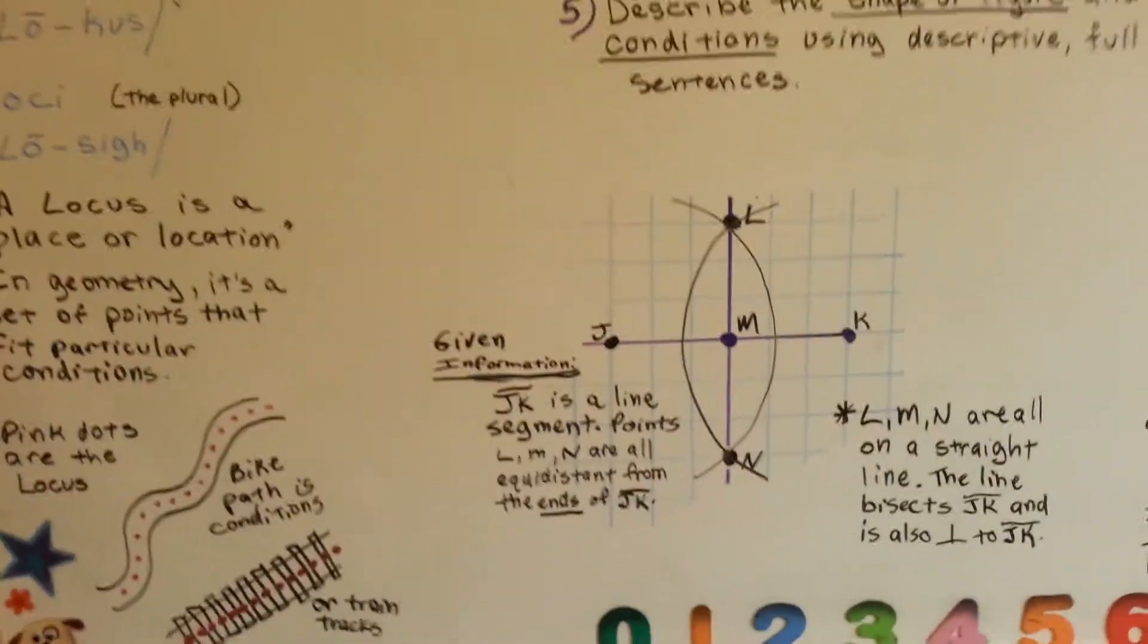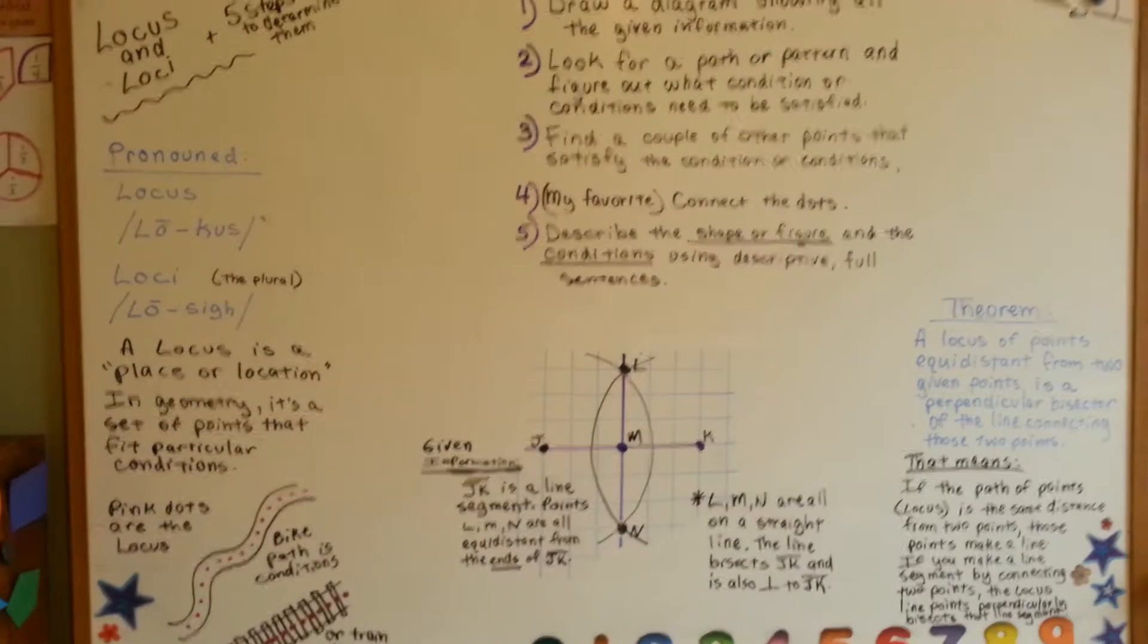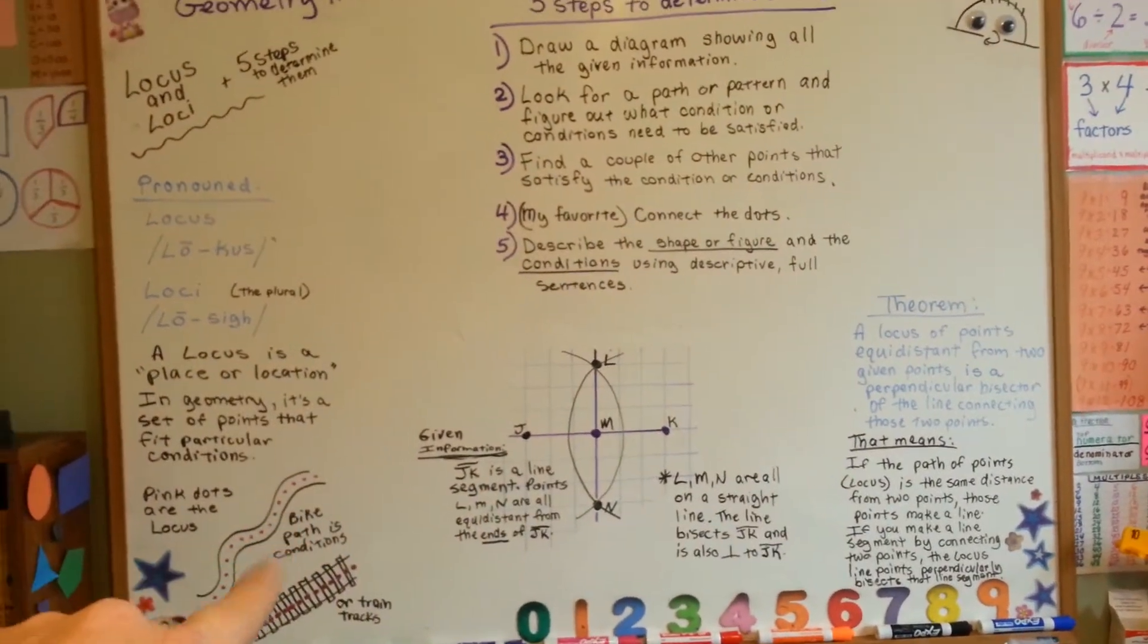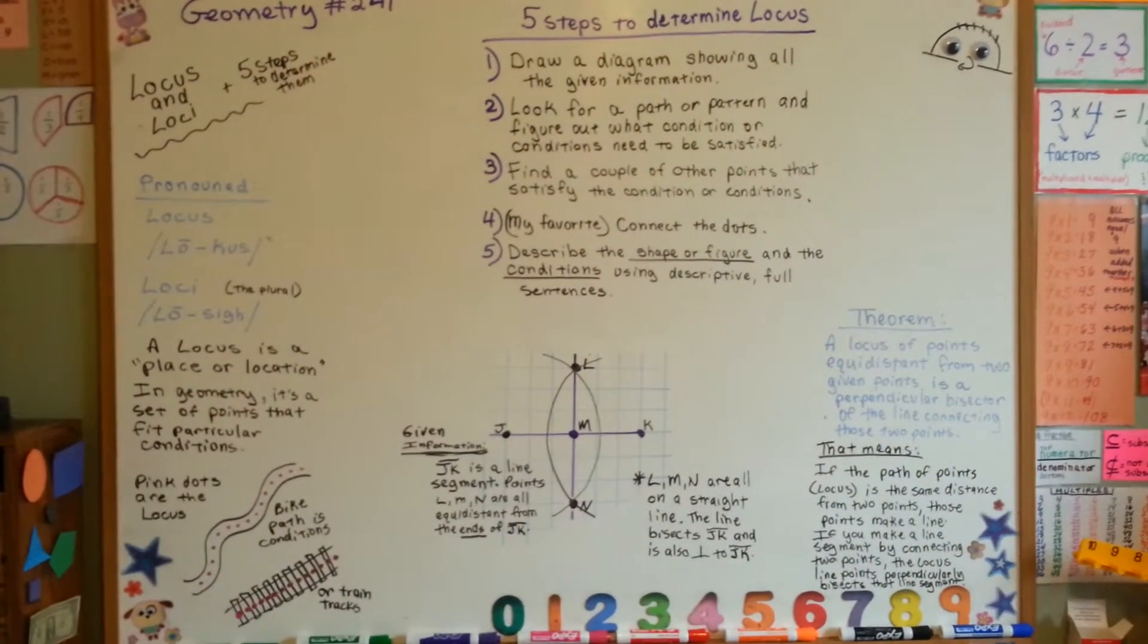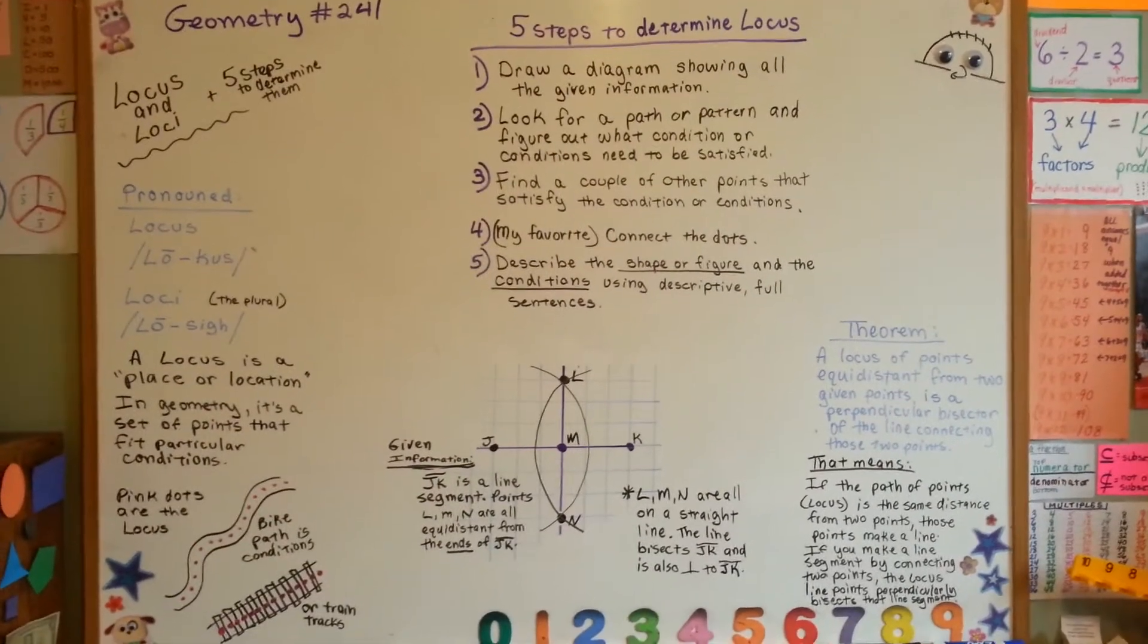That is locus and loci. I almost screwed it up myself there. Locus and loci. That is the path and the conditions as an explanation. Here's the five steps to determine a locus. And you've got a new theorem to help you prove stuff. Isn't that great?